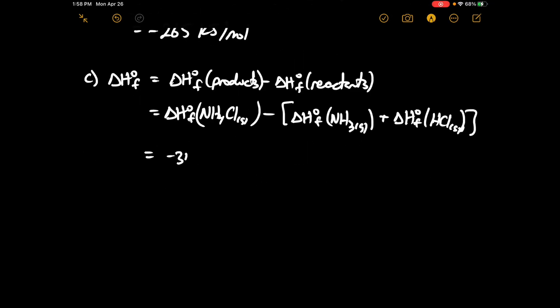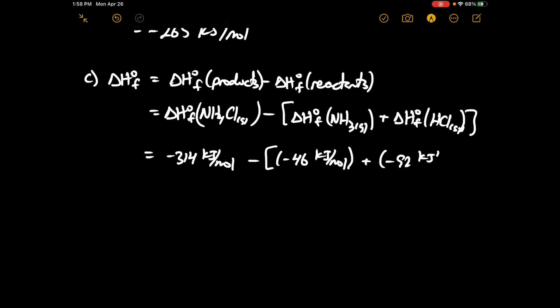This is equal to negative 314 kJ/mol minus negative 46 plus negative 92 kJ/mol, and this gives a delta H°f of negative 176 kJ/mol for Part C.